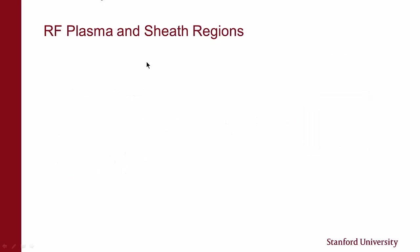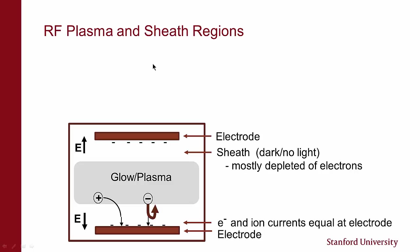Now I'm going to talk about RF plasmas and the sheath regions. In the diagram here, I show a parallel plate type configuration. I have one electrode that can be grounded and the opposite electrode where I'm applying RF power. After breakdown of the gas at equilibrium, I'm going to have a central glow region and dark spaces on both sides of the plasma, between the plasma and each electrode — basically between the plasma and all surfaces. The reason we develop these dark spaces is that electrons, being very small, travel much faster than the ions.